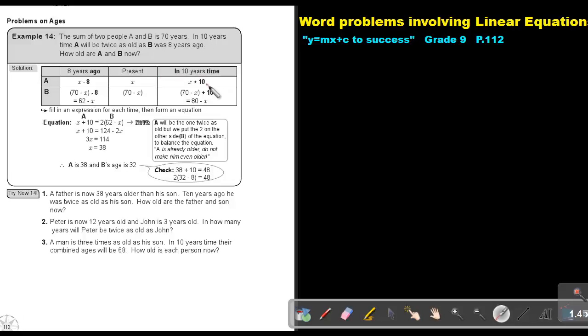In 10 years time, it will be plus 10, plus 10. So basically, 70 plus 10, that will be 80 minus X.